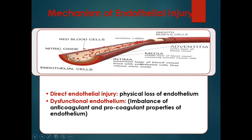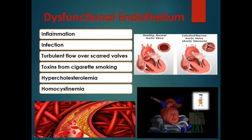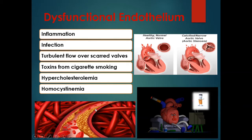Dysfunctional endothelium can be caused by inflammation, infection — bacterial or viral — turbulent flow over scarred walls such as in hypercholesterolemia where atherosclerosis forms and causes turbulent flow, toxins from cigarette smoking, and homocystinemia. All of these create an imbalance between procoagulants and anticoagulants.